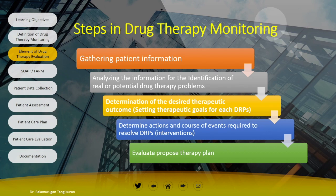The first step is gathering patient information. After gathering the information, we analyze it to identify real or potential drug therapy problems (DRPs). When you identify the problem, you provide the solution — but before that, you must determine the desired therapeutic outcomes. As a pharmacist, we should set a therapeutic goal for each DRP. For example, if the DRP is inappropriate dosing of amlodipine, the therapeutic goal is to ensure the patient receives an appropriate dose based on renal function.